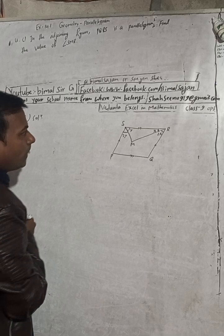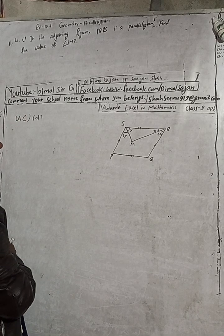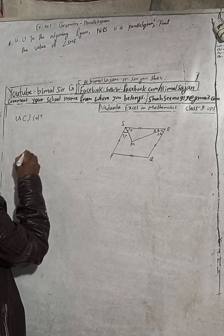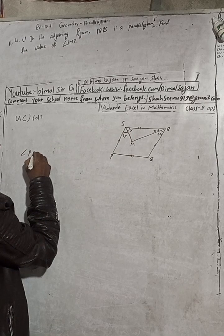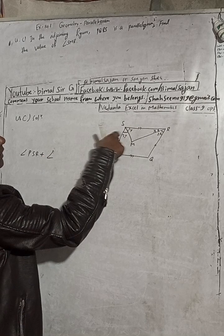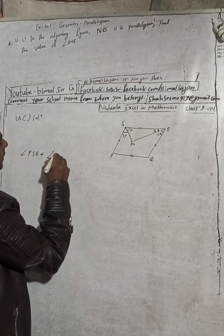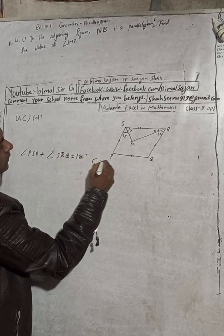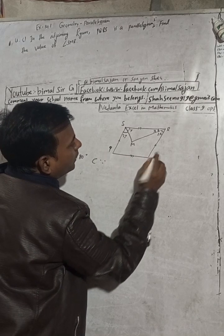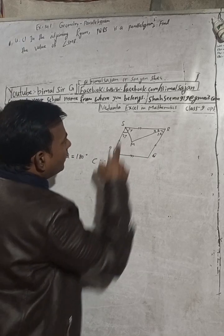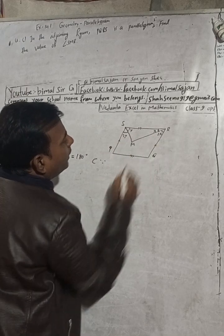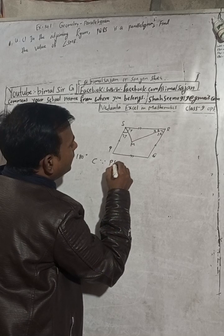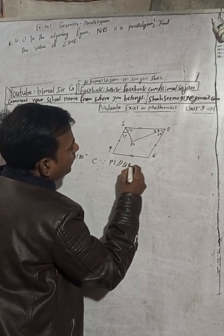Now we can see the relation. Angle PSR plus angle SRQ is equal to 180 degrees. The reason is that P is here and Q is here — both these angles are co-interior angles, because PS is parallel to QR. That is why their sum is 180 degrees.